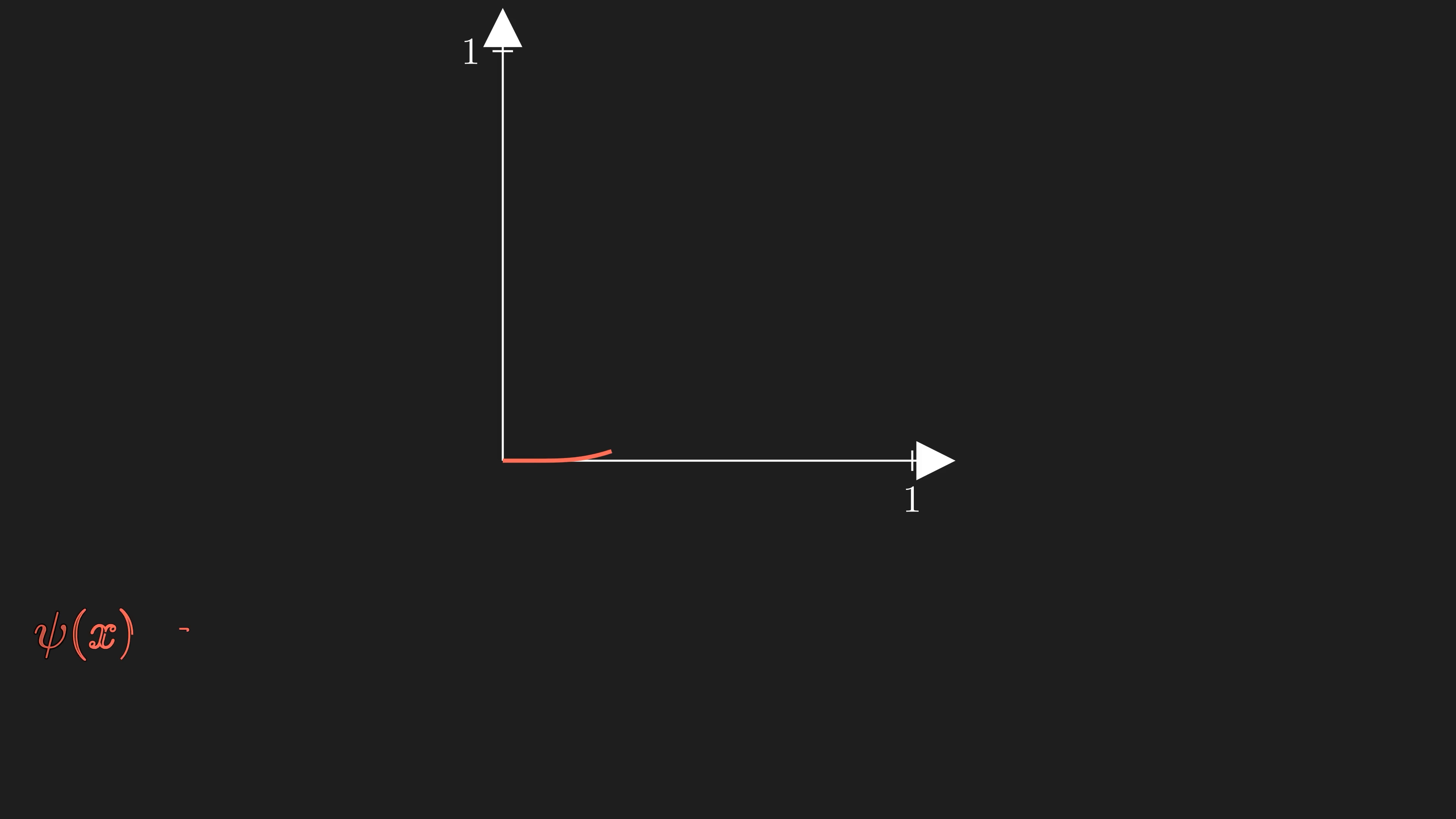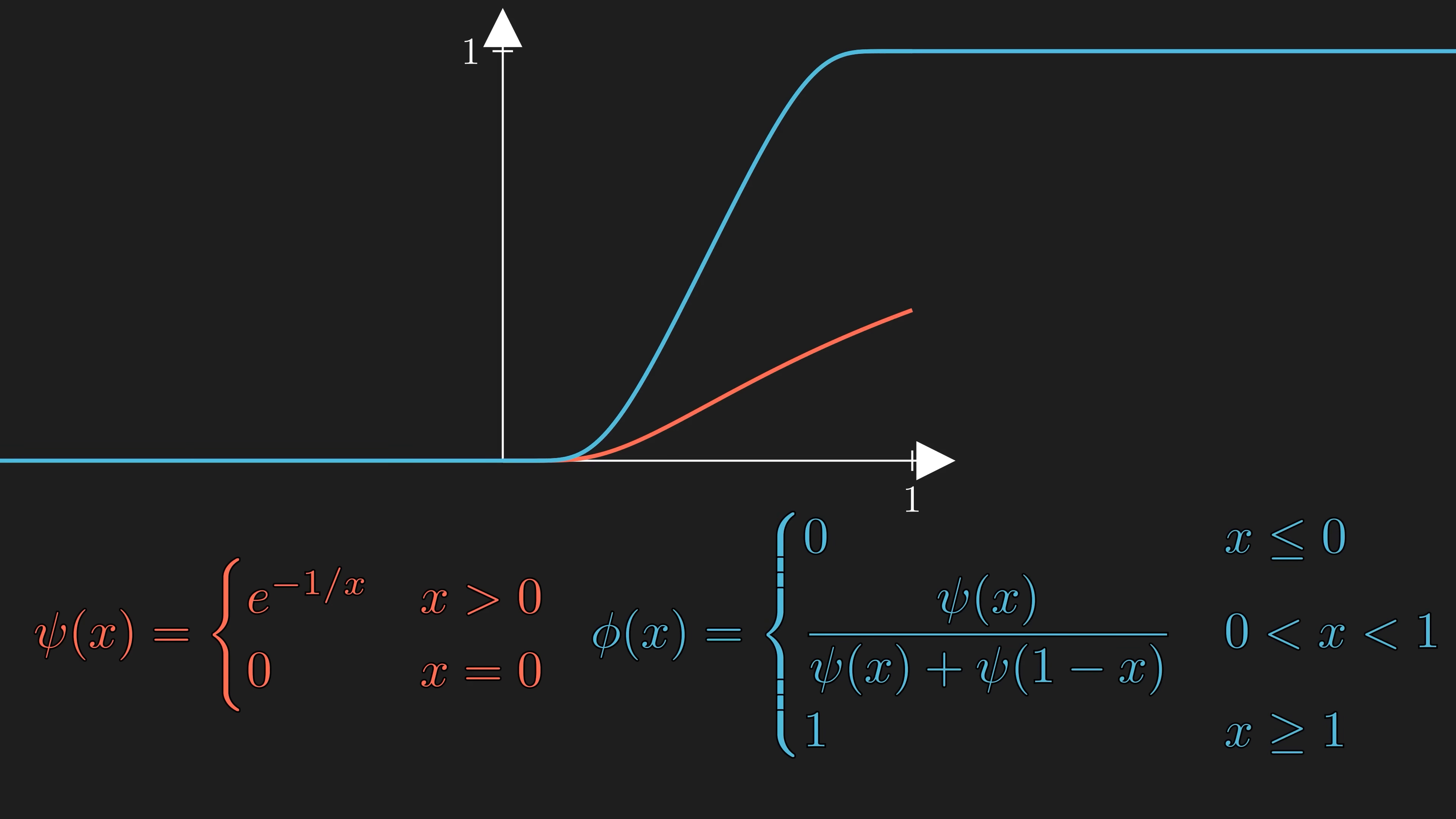And using psi, we can construct phi. And once we extend the domain of phi to include the constant portions, then phi is a smooth step function.